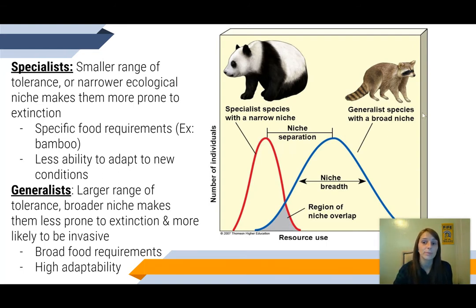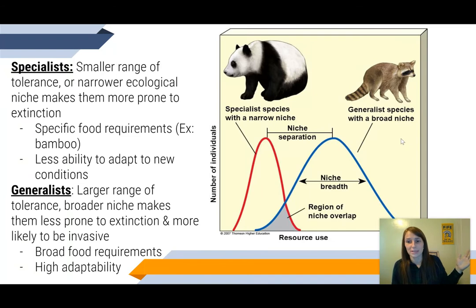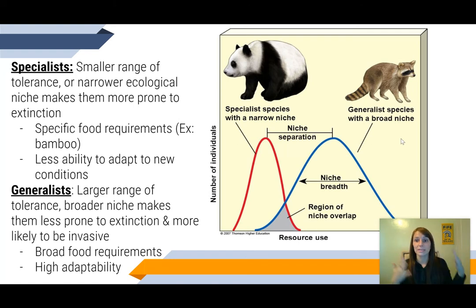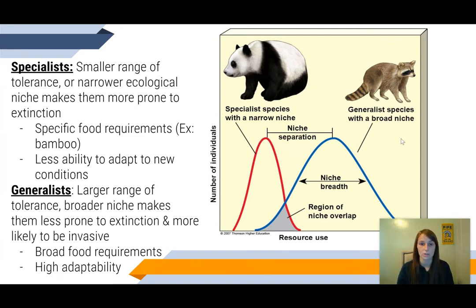A perfect example of a generalist is the raccoon. As we can see in the graph, their niche is much wider than a panda's because they can eat basically almost anything — plants, animals, grubs, even your trash, and still thrive. They can live out in the forest in the Cascades and also right in your backyard. If their forest becomes more houses and urban areas, they do just fine. They're less likely to go extinct because they can get the resources they need from a variety of sources, unlike the panda.